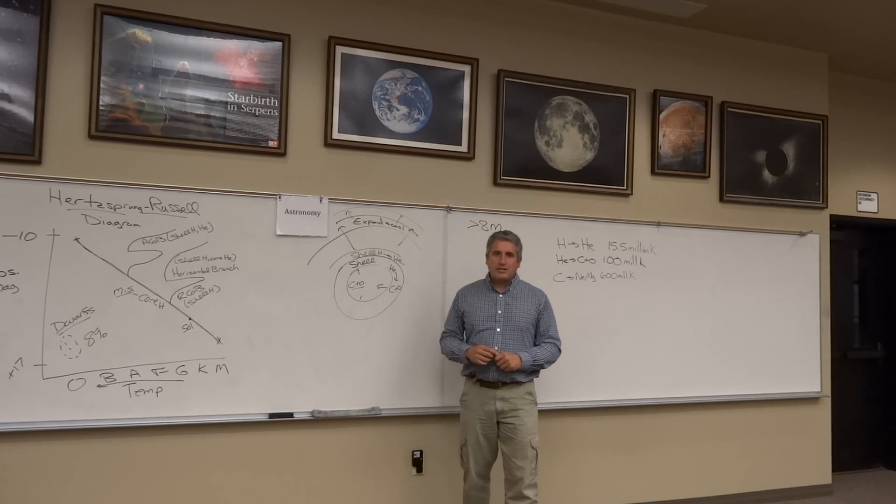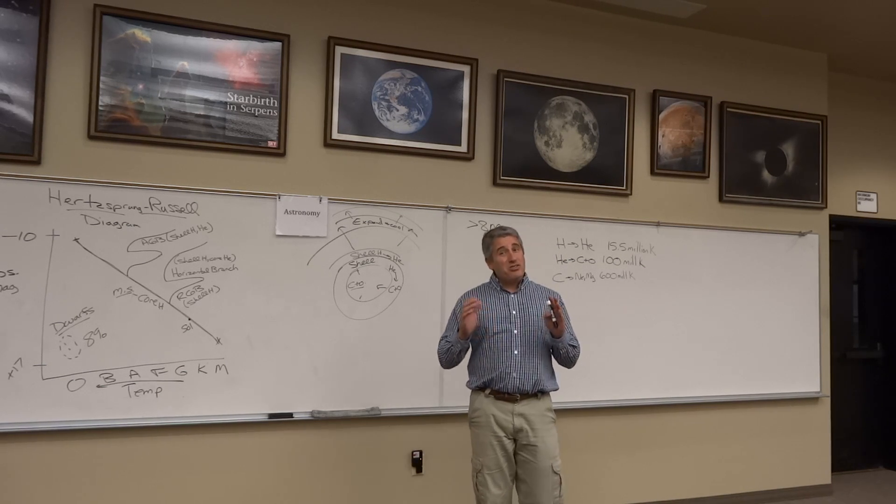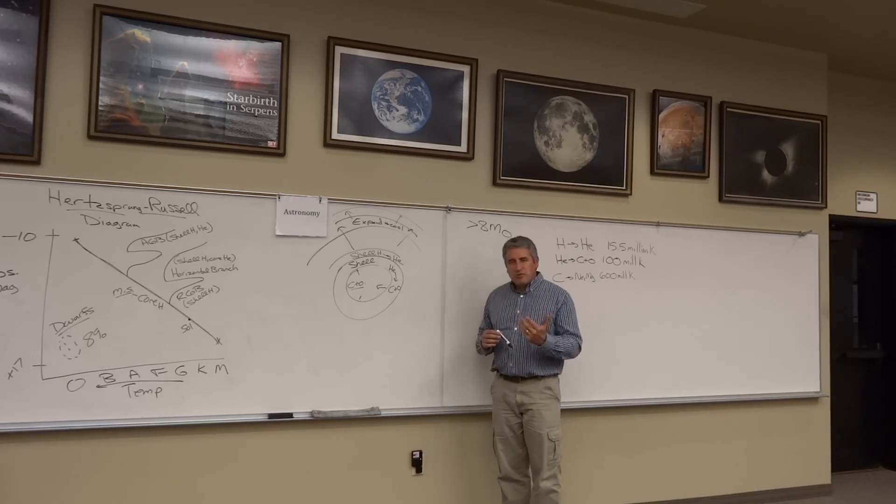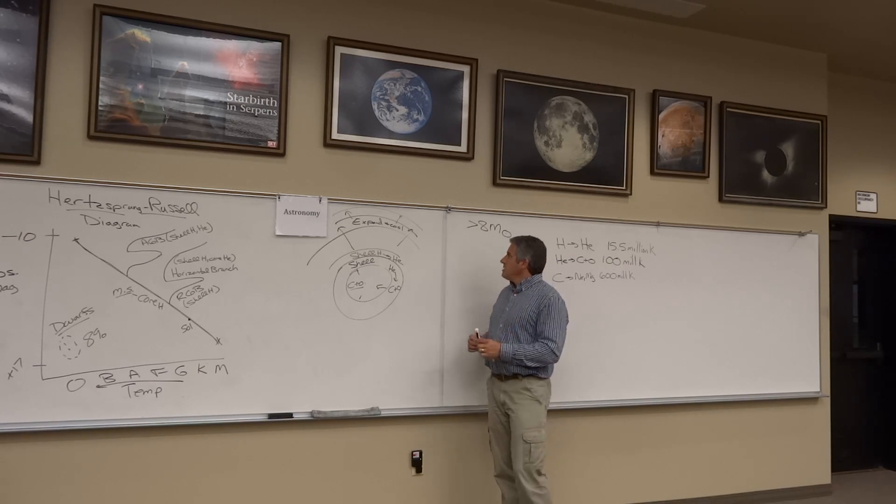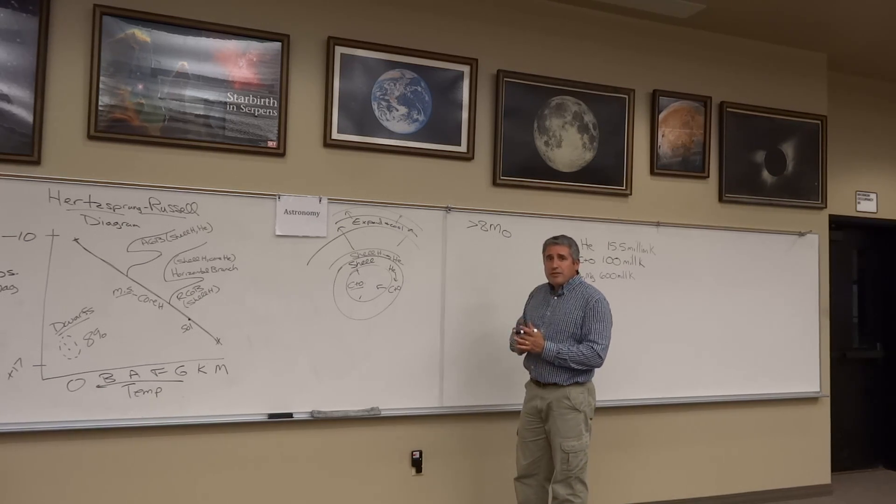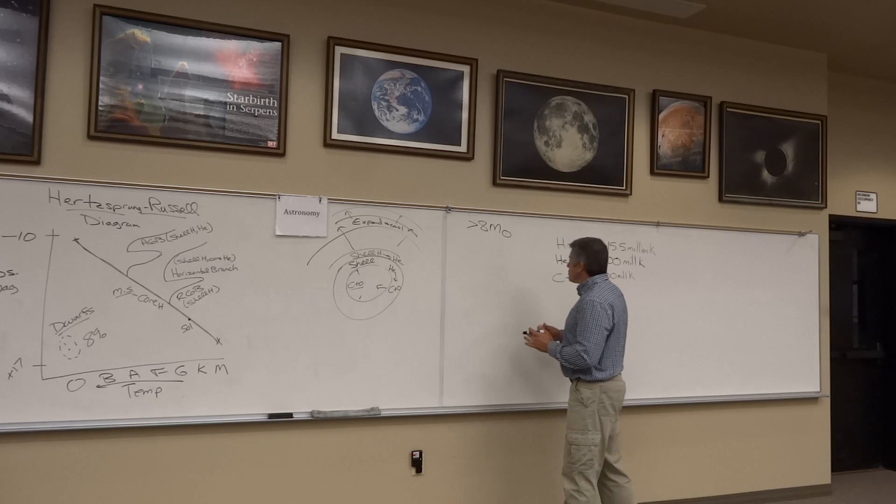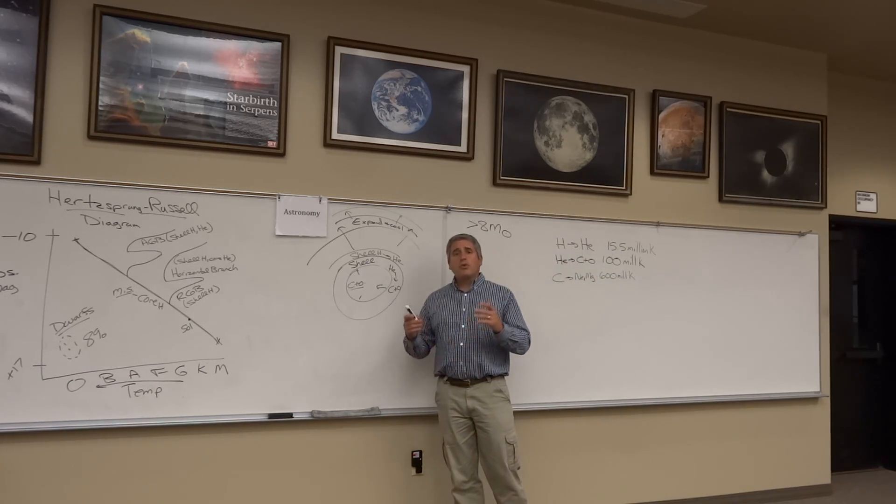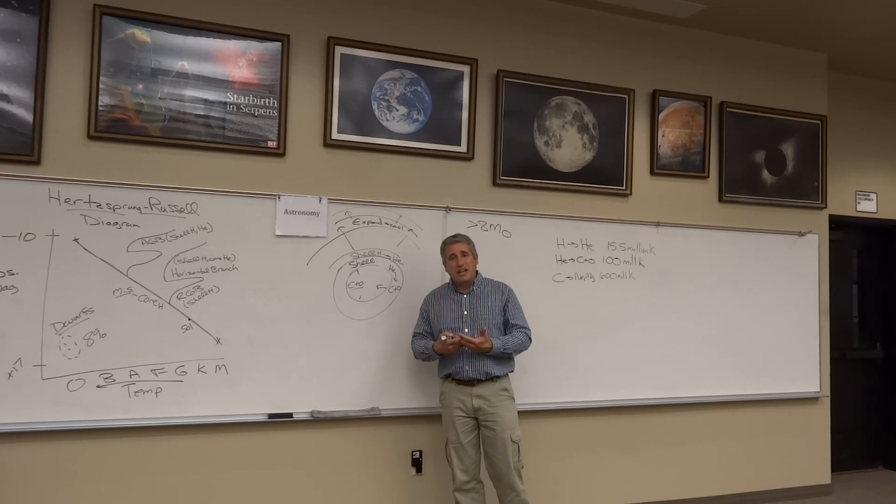What happens if a star is greater than eight solar masses? Keep in mind that stars this big are pretty rare in the universe. Most stars are smaller, redder than the sun. But it turns out there are some stars that are greater than eight solar masses and they push right on through electron degeneracy pressure.